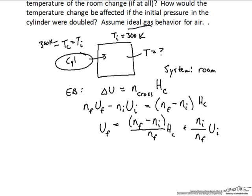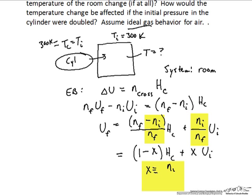Now we can evaluate how the internal energy per mole of gas in the room changes as a result of this leak. We can re-express this by defining a new quantity x, where x equals n_initial over n_final. For example, if there are 9 moles initially and 10 moles finally, x equals 0.9, giving us 0.9 times u_initial plus 0.1 times the enthalpy of the cylinder. So u_f is a weighted average — weighting 10% the enthalpy of the cylinder and 90% the initial internal energy of the room.